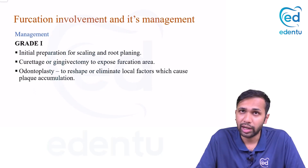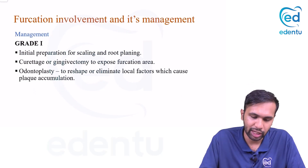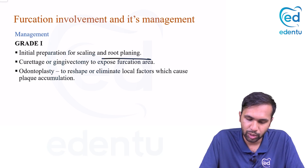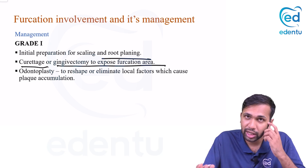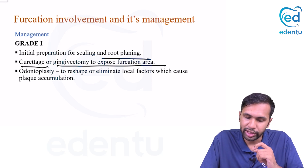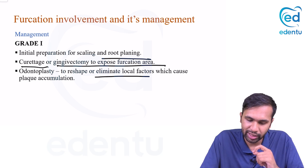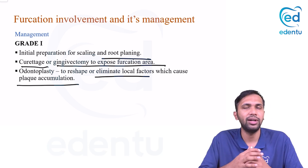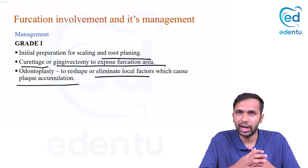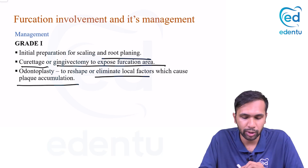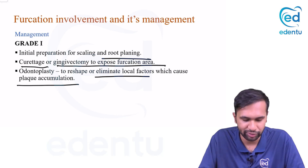For management: grade one is an early inflammation and can be managed by scaling and root planing. You can also perform a gingivectomy or gingivoplasty to expose the furcation area, and odontoplasty to reshape or eliminate local factors causing plaque accumulation — for example, cervical enamel projections or enamel pearls.